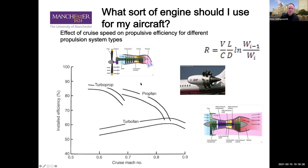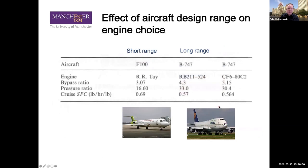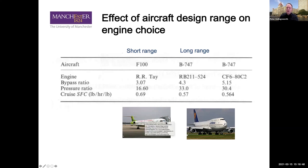Regarding engine choice: the 747-400 and the F100 were designed at about the same time — late 1980s, early 1990s — but have very different engines. The 747 had a bypass ratio in the 4.5 to 5 range, while the F100 was around 3 — a significant difference of 1.5 times. This comes down to the trade between how you operate the aircraft.